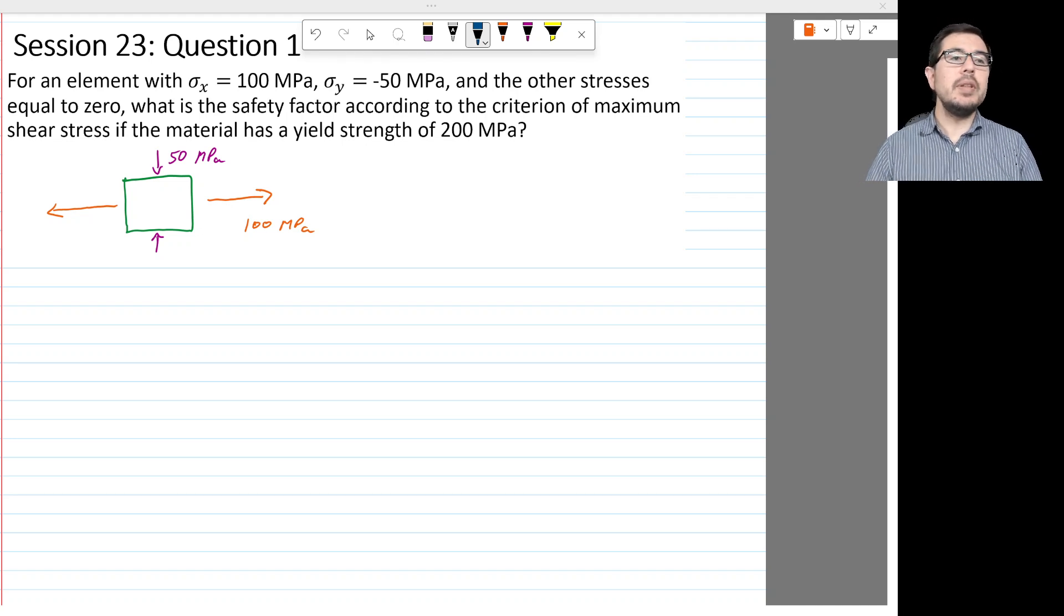This question states, for an element with sigma x equal to 100 MPa, sigma y equal to minus 50 MPa, and the other stress is equal to zero, what is the safety factor according to the criterion of maximum shear stress if the material has a yield strength of 200 MPa?